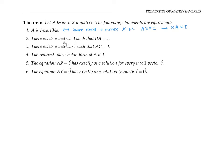Statement two says that there exists a matrix B such that B times A equals I. If A is invertible, there's a matrix we can multiply on the left to get I. It turns out that for square matrices, B times A equals I also implies A times B equals I. So statement two implies statement one. Similarly, if A times C equals I, then C times A equals I, so statement three also implies statement one, and vice versa. Statements two and three are both equivalent to statement one.